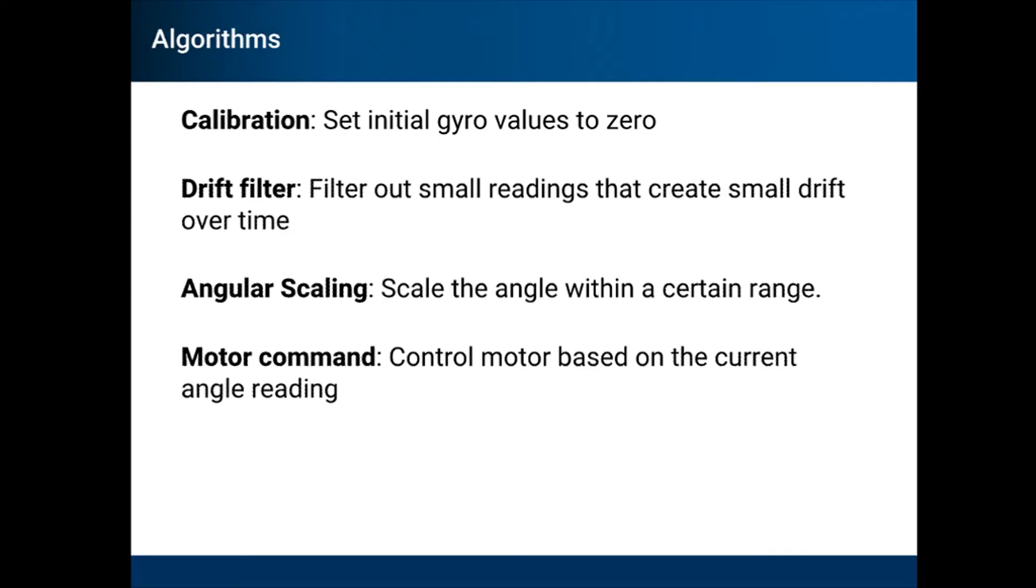In order to collect meaningful data from the gyro and then use that to control the motor, multiple algorithms had to be created. The first of these was a calibration algorithm. This algorithm set the initial gyro values to 0.